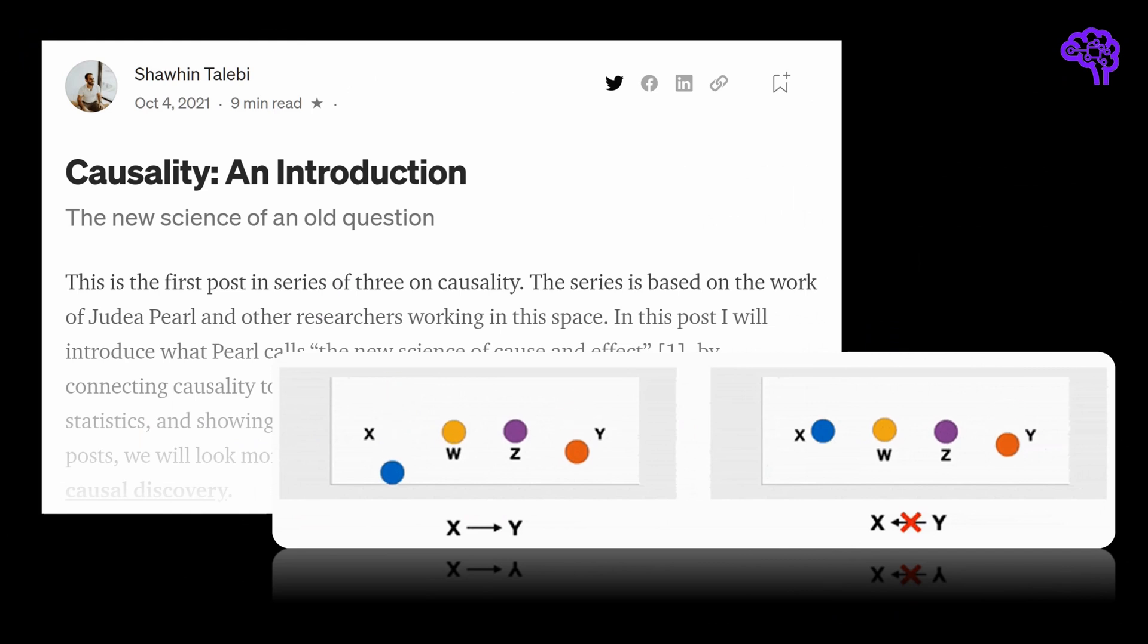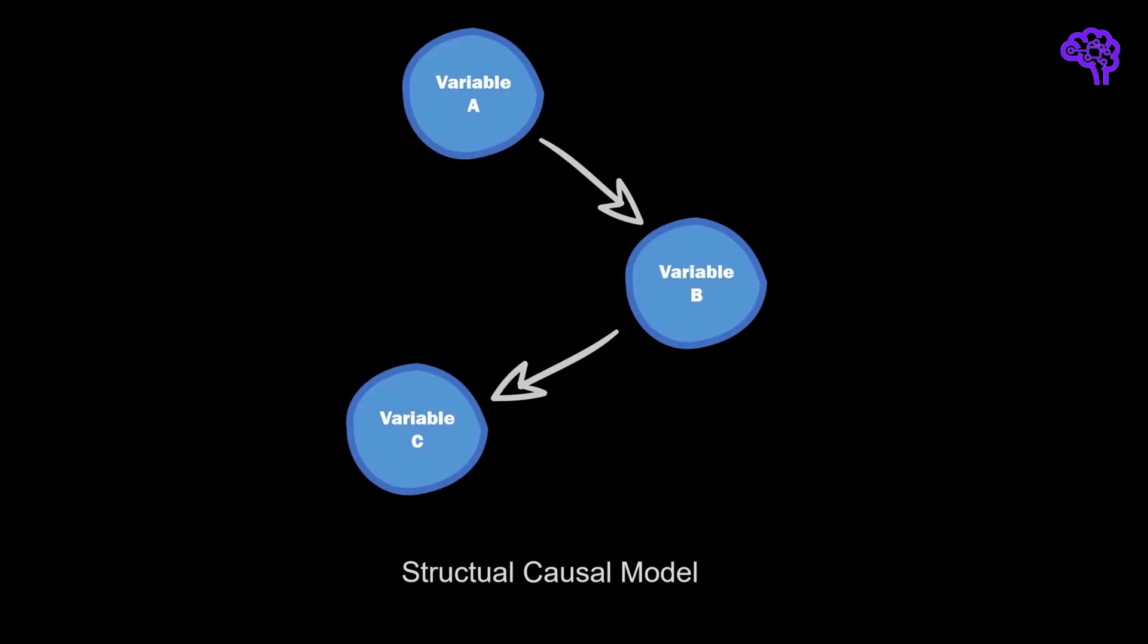In the following, I will give you a quick introduction to causality, which is mainly based on Shaheen Talebbi's blog post. I hope I pronounced the name correctly. For everyone who wants to get started with this topic, this is certainly a great place to do so. You find a link in the video description and also some other helpful resources. My initial question with SCMs was always how do you come up with this graph structure. There are basically two modes of operation here: causal inference and causal discovery.